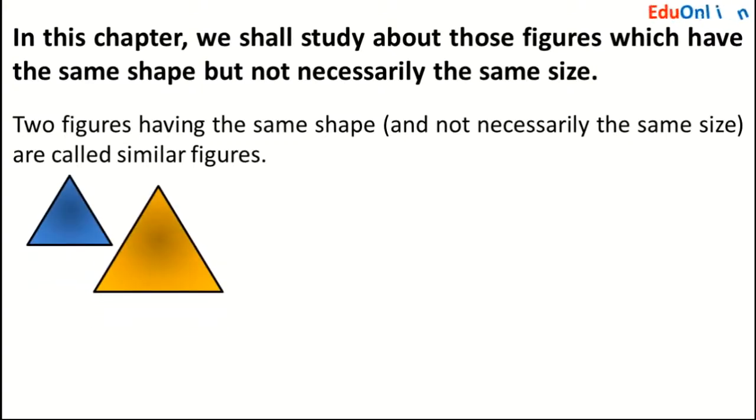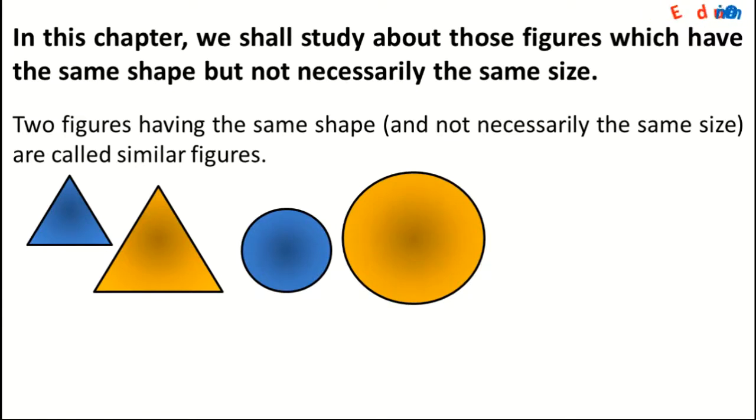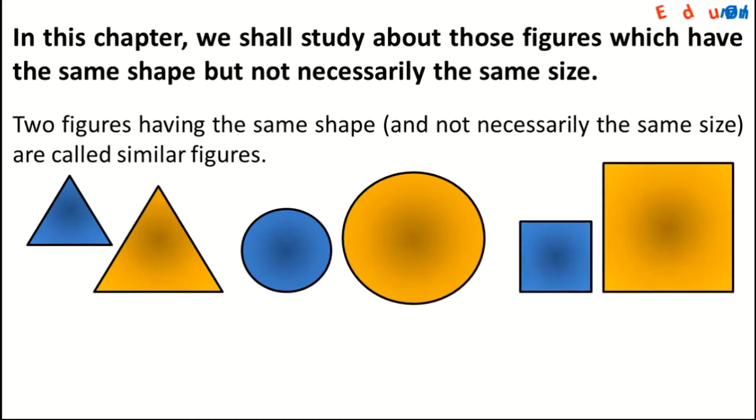All equilateral triangles are similar. All circles are similar - the shape will be the same, but the radius may be different. All squares are similar. You can see this is a big square and this is small, but the shape is the same, only the size differs.